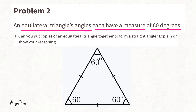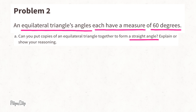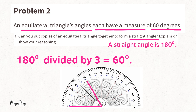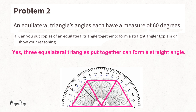Problem 2: Equilateral triangles' angles each have a measure of 60 degrees. Part A: Can you put copies of an equilateral triangle together to form a straight angle? A straight angle measures 180 degrees. Since 180 ÷ 3 = 60, three angles of 60 degrees form a straight angle of 180 degrees total. Yes, three equilateral triangles can form a straight angle.